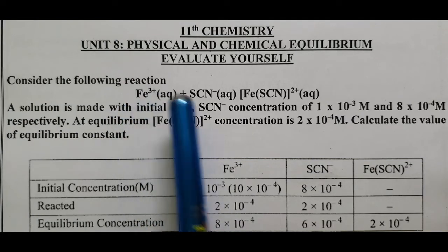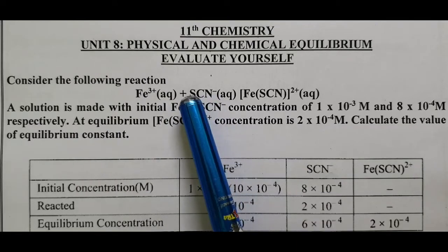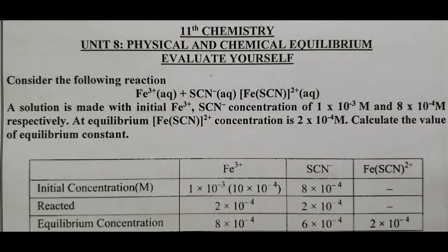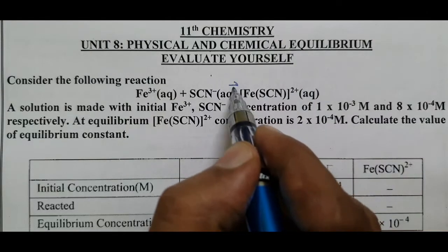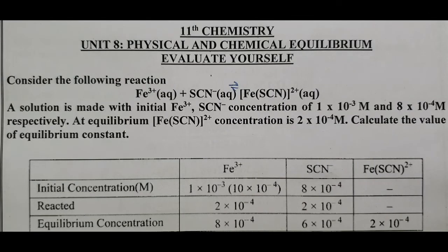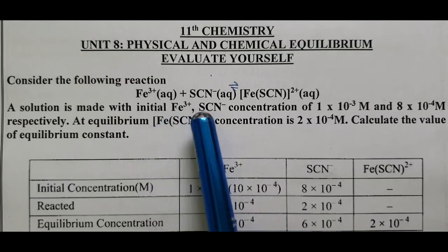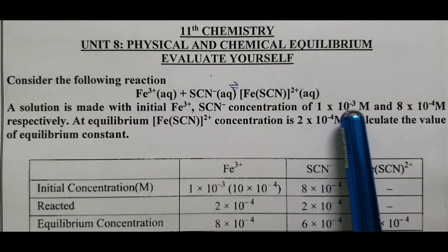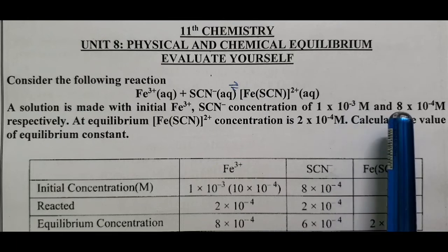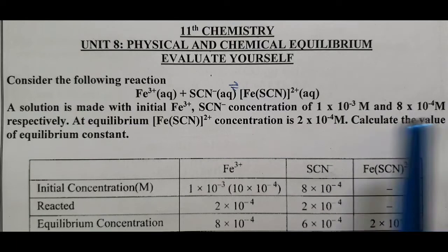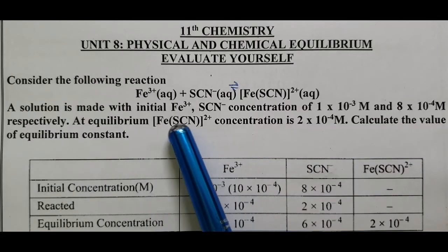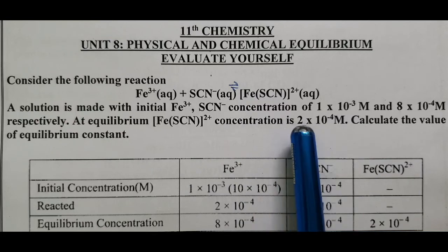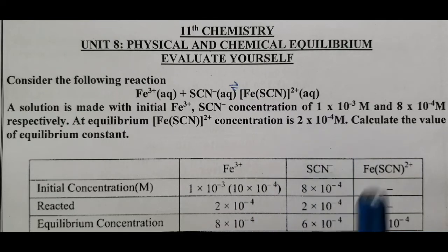Fe³⁺ (in aqueous state) plus thiocyanate ion (SCN⁻) gives FeSCN²⁺, with one equilibrium arrow. A solution is made with initial Fe³⁺ concentration of 1×10⁻³ M and SCN⁻ concentration of 8×10⁻⁴ M respectively.